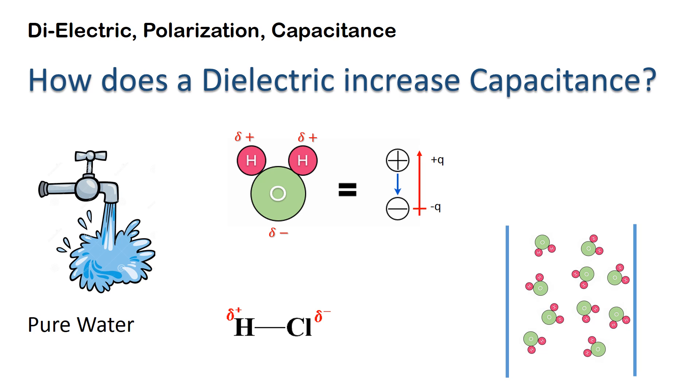Let us take pure water as a dielectric which is inserted between the parallel plate capacitors. We know that H2O is a polar molecule. Oxygen is electronegative and pulls the electrons towards itself, so the hydrogen becomes partially positive and the oxygen is partially negative.